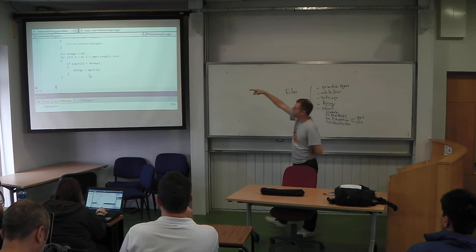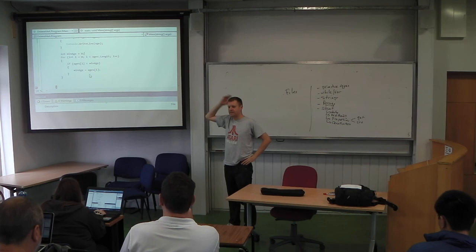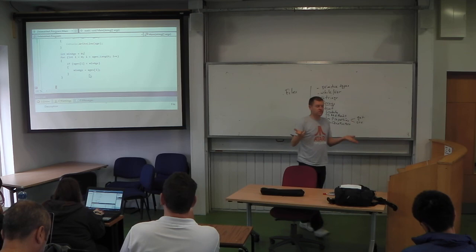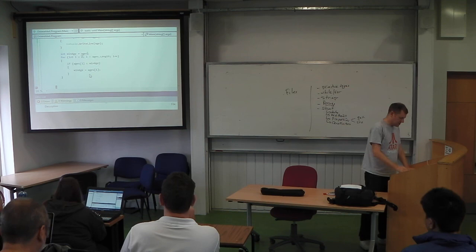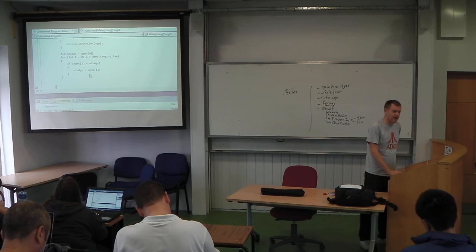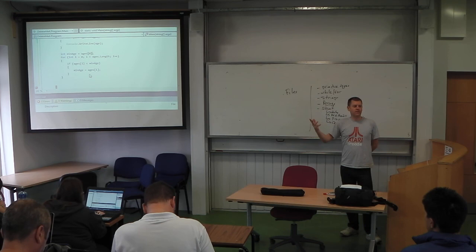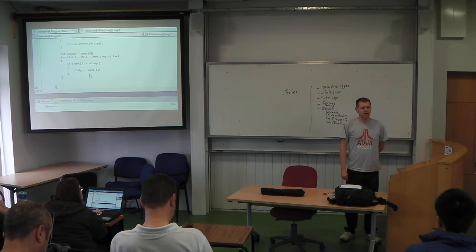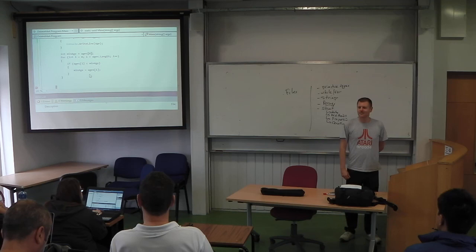You need a high initial value for the minimum. If you set it to zero and all elements are five or six, none are less than zero and the minimum comes out as zero incorrectly. One solution is to set it to the zeroth element of the array. That works as long as the array has elements — if the array is empty you'll get an exception.